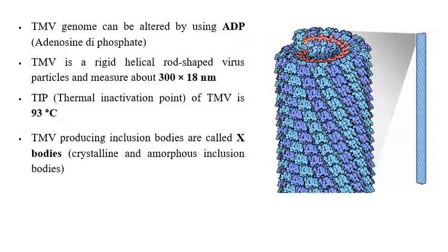The genome of TMV can be altered or changed by using ADP — adenosine diphosphate, which has two phosphate molecules, compared to ATP which has three. In exams, a question may ask whether TMV genome can be changed by ADP, ATP, or monophosphate. The correct answer is ADP: adenosine diphosphate can alter the genome of Tobacco Mosaic Virus.